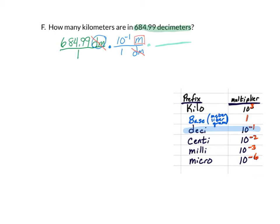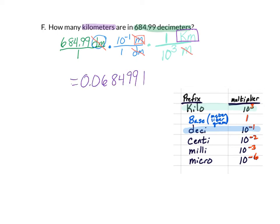For the next fraction, we put meters on the bottom to cancel and kilometers on top. We know 1 kilometer is 10 to the third meters. The meters cancel and we're left with our answer in kilometers. In the calculator: 684.99 divided by 1, times 10 to the minus 1, divided by 1, times 1, divided by 10 to the third gives us 0.068499 kilometers, or in scientific notation, 6.8499 times 10 to the negative 2 kilometers.